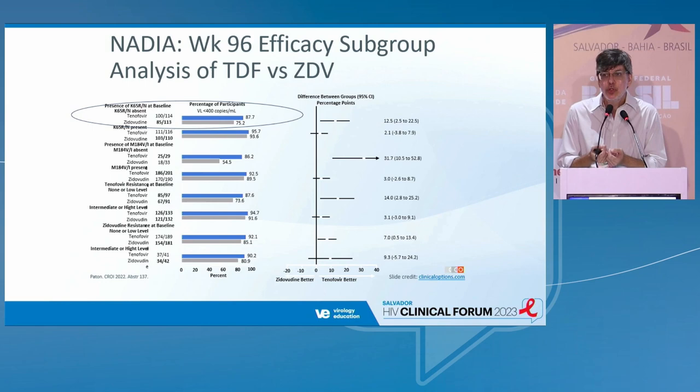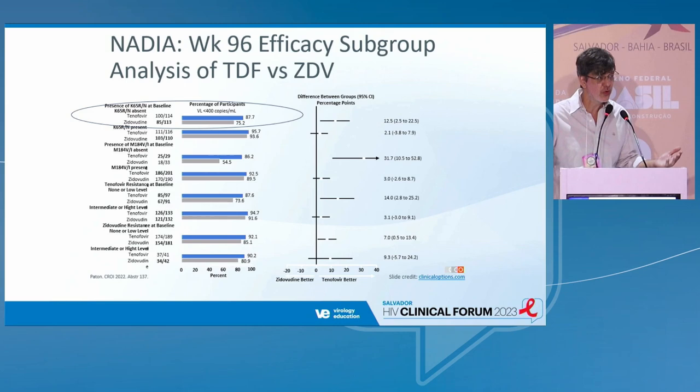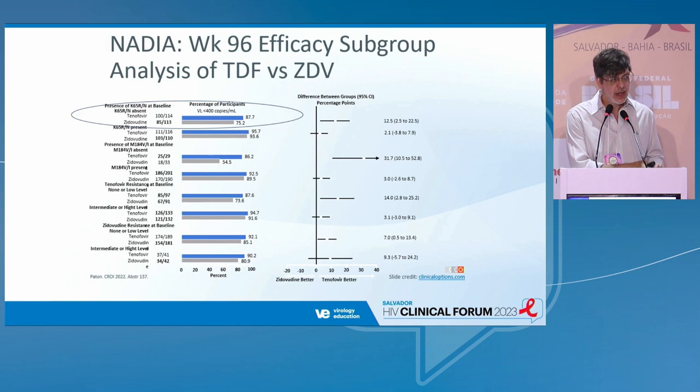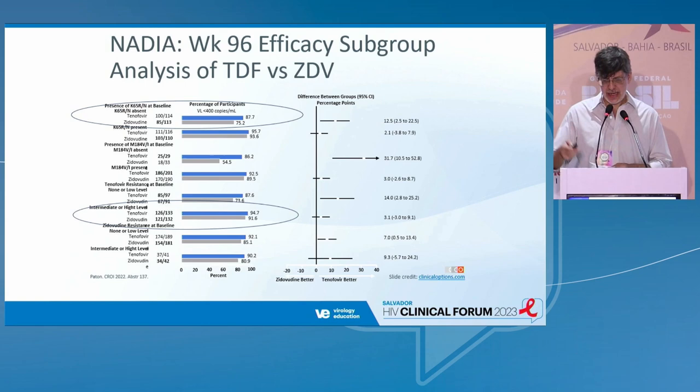This shows that dolutegravir needs very little. Even with two drugs of compromised efficacy — what many authors would call functional monotherapy — the study shows that it always helps. Even tenofovir and lamivudine with complete resistance, in the presence of a powerful high-barrier drug, is capable of suppressing the virus and keeping suppression. Here we have the tenofovir-resistance arm with wonderful results, even better in terms of percentage.